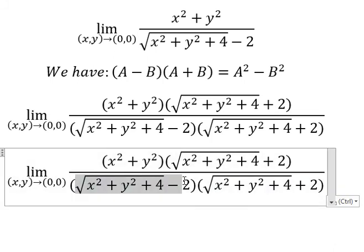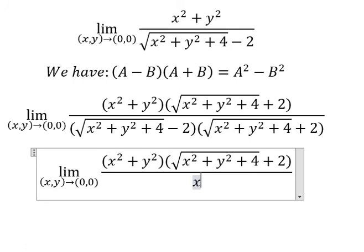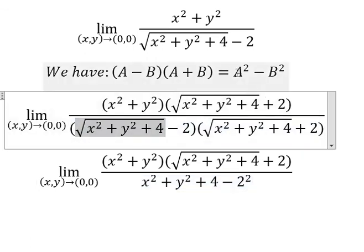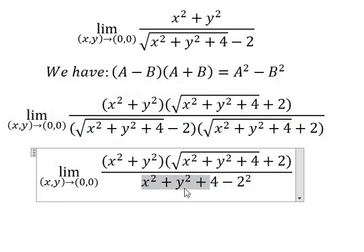So this one we will have x squared plus y squared plus 4 minus 2, to the power of 2. The square root with the power 2, you got like this.